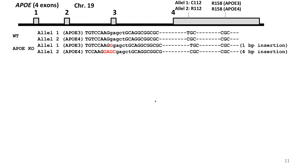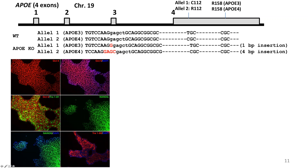We made an ApoE knockout. The strategy is straightforward: you introduce a frameshift mutation in one of the early exons to knock out the gene. The parental line we used has one ApoE allele 3 and one allele 4. We knocked out both, so in this line we have neither allele 3 nor allele 4. General characterization was done for all our lines, and all mutations are confirmed by sequencing.